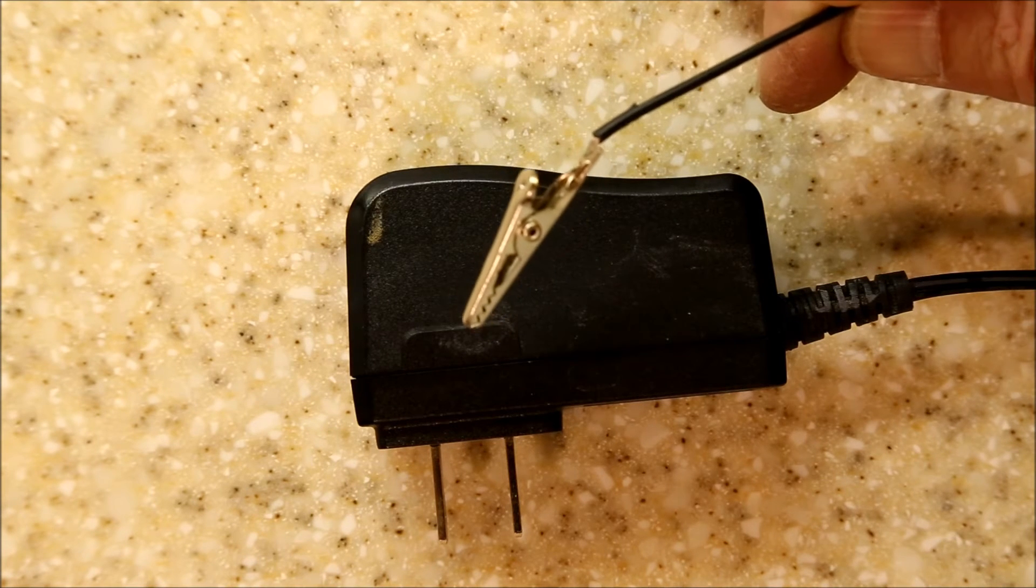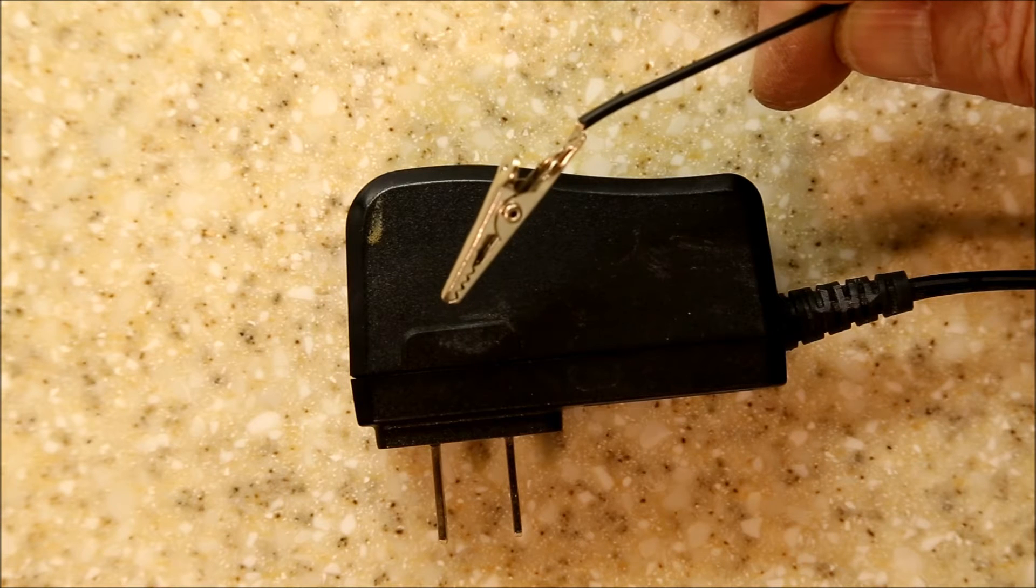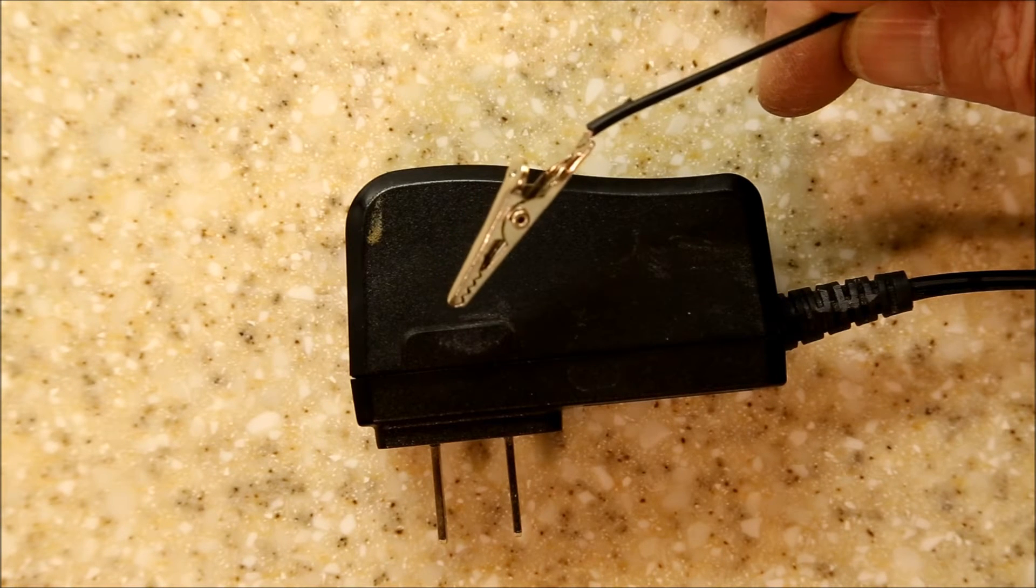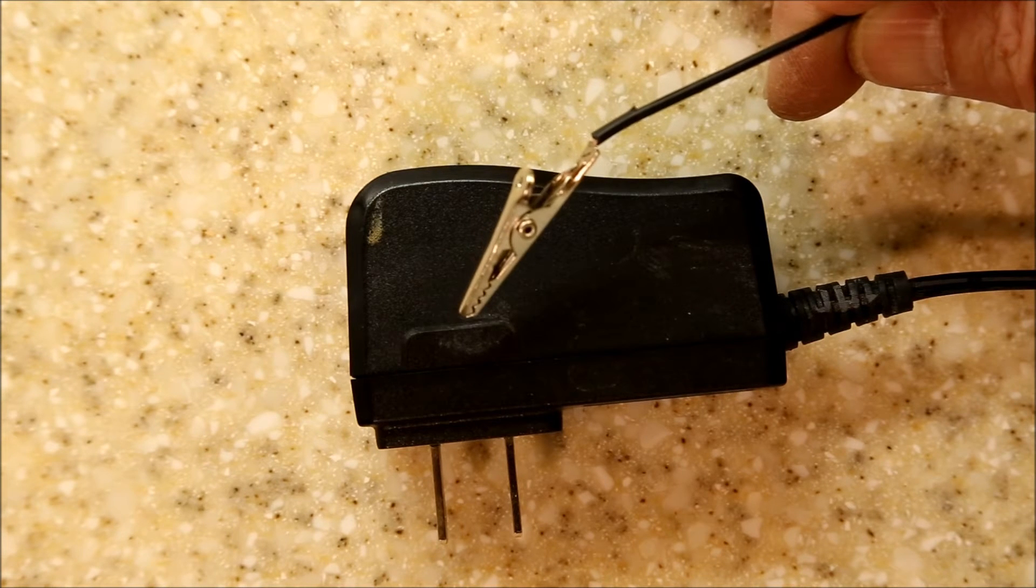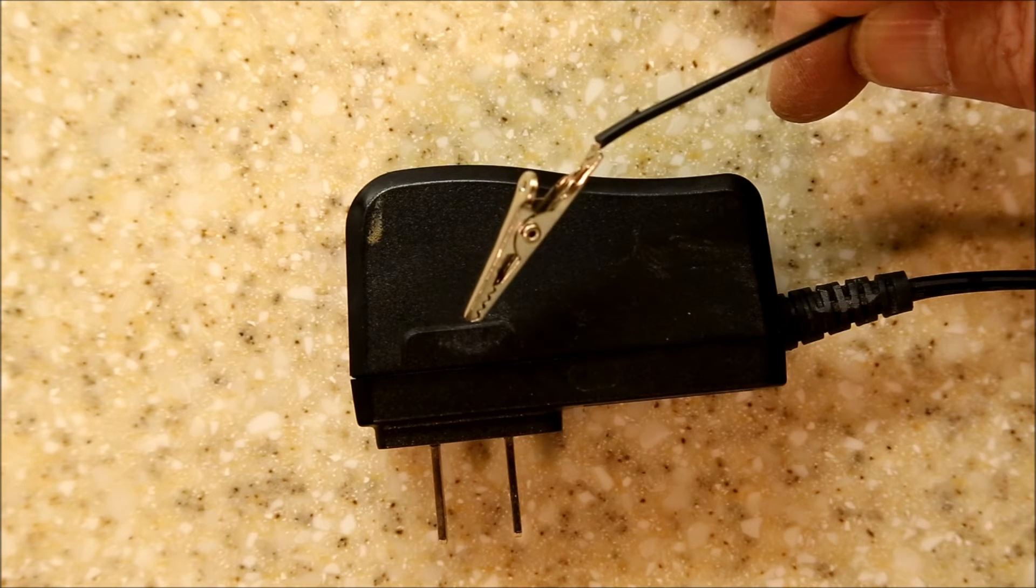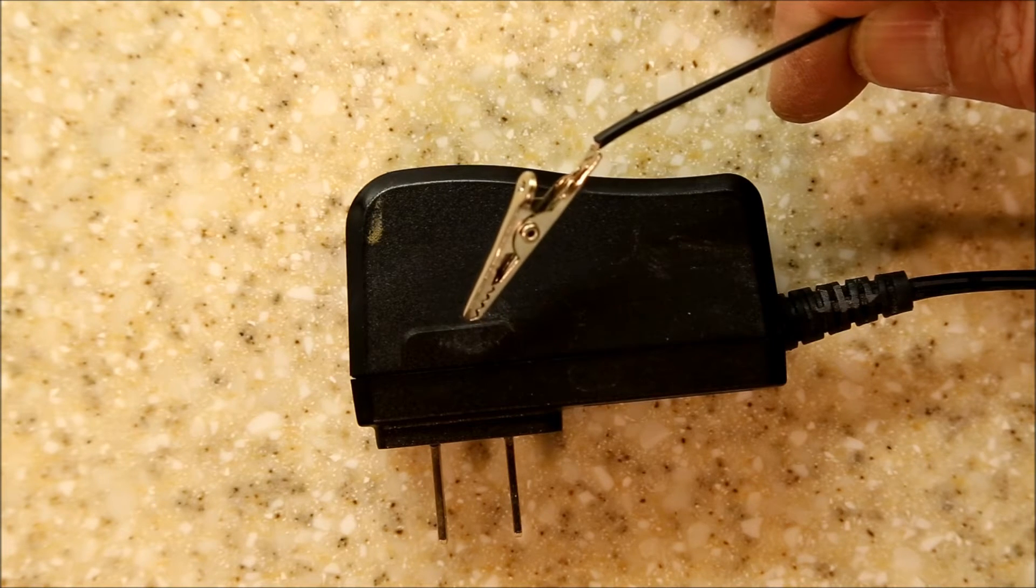Attaching alligator clips to the end will make it easy to attach them and detach them from your electrodes, but this isn't really necessary. Most of these come with socket ends, and you can usually figure out a way to make electrical contact with the inside and outside without shorting it out.